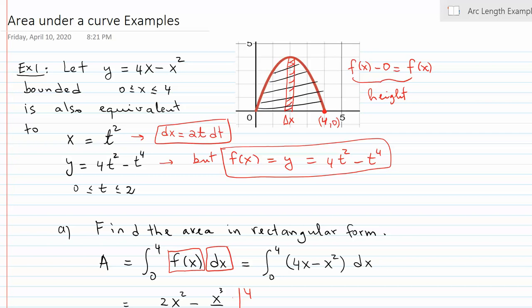I'm going to find the area under the curve with respect to dx. As you all know, the rectangle here is vertical, so that's a delta x, and if you go top minus bottom you get f(x) minus 0, which gives me the height of the rectangle — that's simply f(x). Then my limits are obviously going to go from 0 to 4.